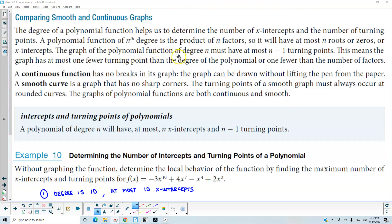The graph of the polynomial function of degree n must have at most n minus 1 turning points. This means the graph has at most one fewer turning point than the degree of the polynomial or one fewer than the number of factors.